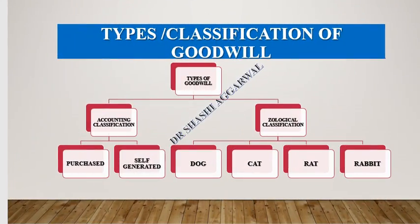Classification of goodwill and types of goodwill: We can classify goodwill as accounting classification and geological classification. Under accounting classification, there is purchased goodwill and self-generated goodwill. Under geological classification, there is dog, cat, rat, and rabbit goodwill.